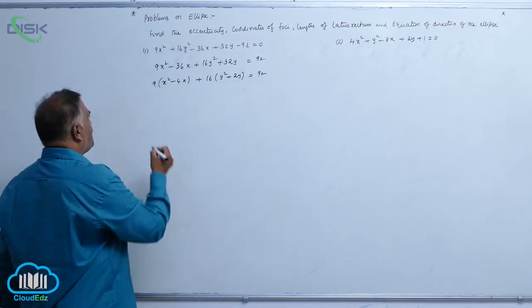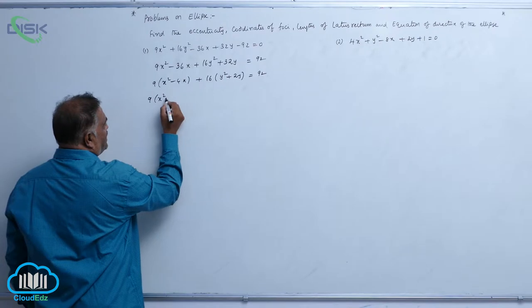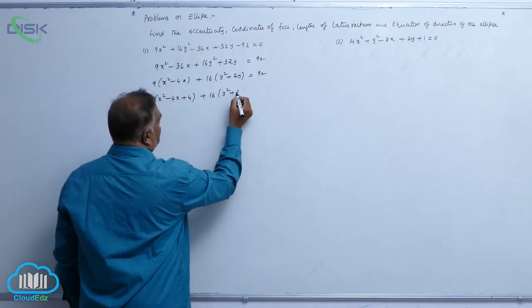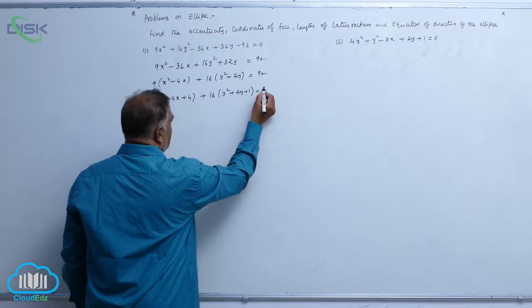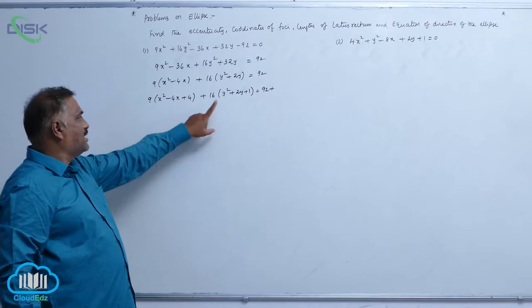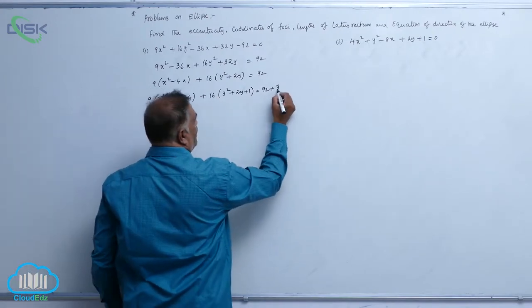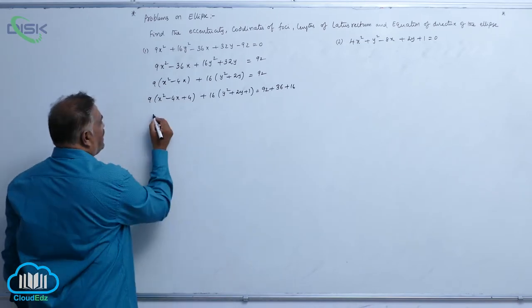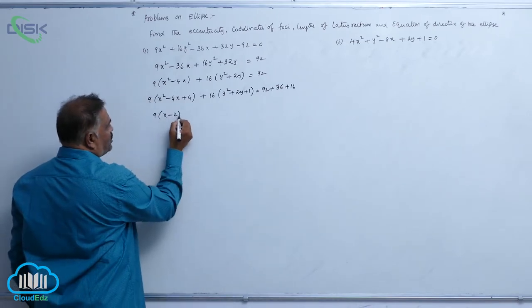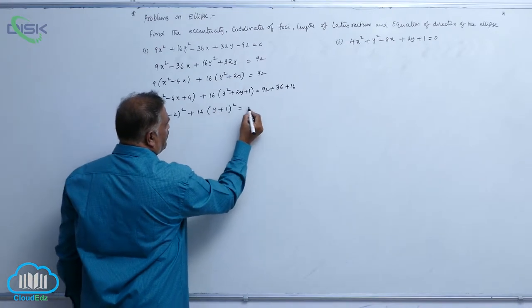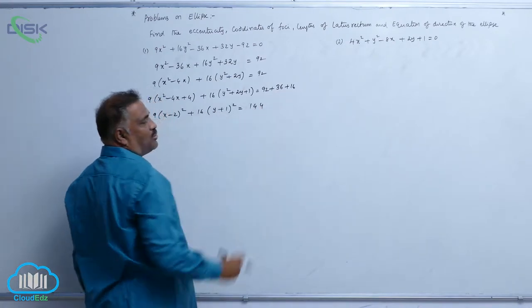Now it is 9 into x square minus 4x plus 4, 16 into y square plus 2y plus 1 is equal to 92 plus, here you added 36 and 16. So on RHS side also we will add. Now this is 9 into x minus 2 whole square, 16 into y plus 1 whole square equal to, it sums up to 144.